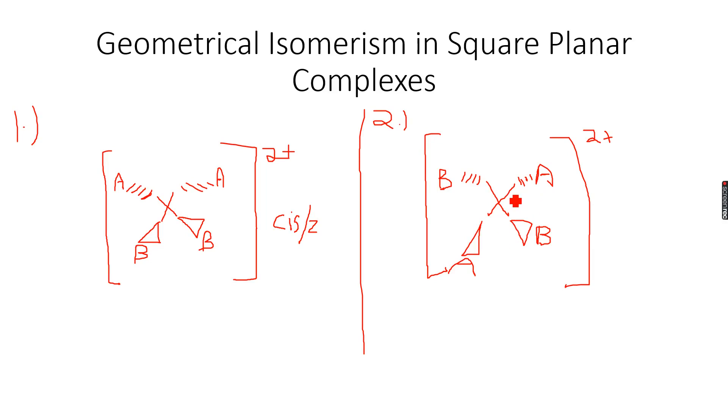The bond angles between both the A's over here is 180 degrees, the bond angles between both the B's over here is 180 degrees, so you can see that they are opposite, so this is my trans isomer and it is my E isomer.